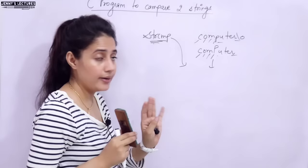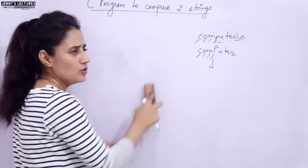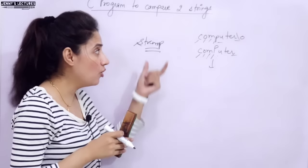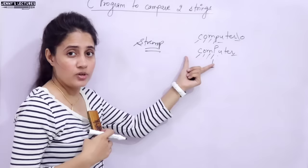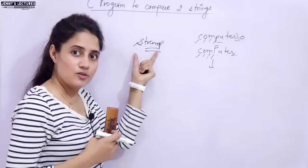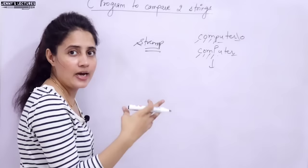Now, how to write the program. First, see the prototype of the strcmp function — where it has been declared. It is in the string.h header file. The compiler doesn't inherently know what string compare means, so we have to tell it through coding. We will include the string.h header file when using these predefined functions. The function takes two arguments — two strings for comparison.